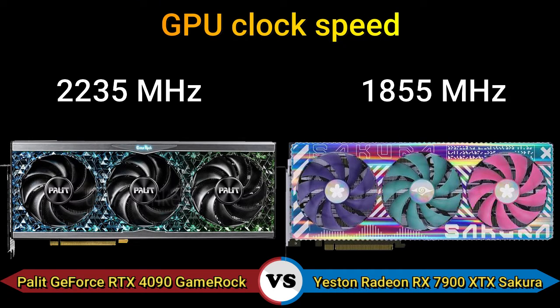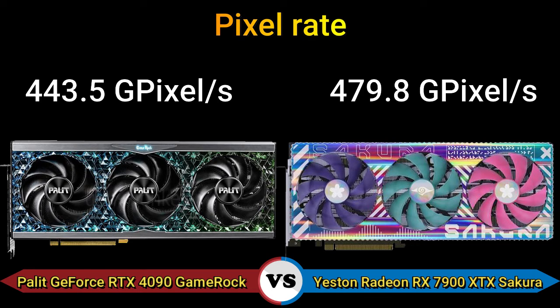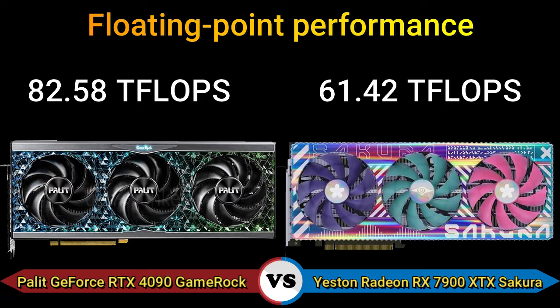GPU clock speed: 2235 MHz and 1855 MHz. GPU turbo: 2520 MHz and 2500 MHz. Pixel rate: 443.5 and 479.8 gigapixels. Floating point performance: 82.58 and 61.42 teraflops.